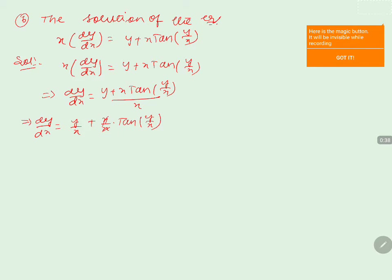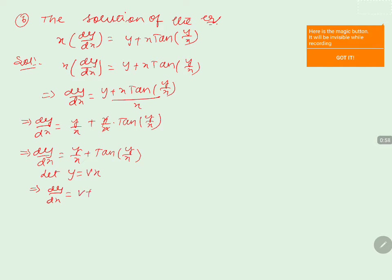So we write dy/dx = y/x + tan(y/x). Now, in order to evaluate the problem, we will write y = vx. Differentiating on both sides, we get dy/dx = v + x·(dv/dx).